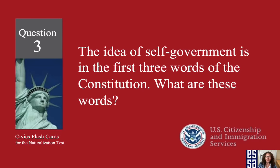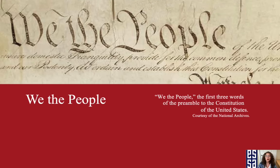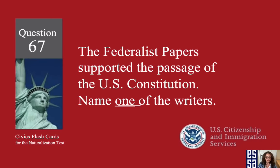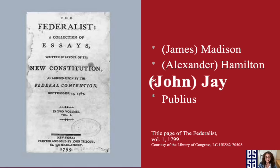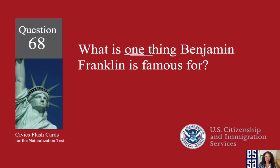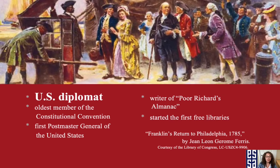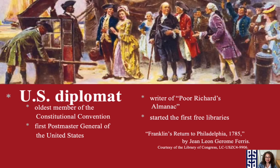The idea of self-government is in the first three words of the Constitution. What are these words? We the people. The Federalist Papers supported the passage of the U.S. Constitution — name one of the writers: John Jay. What is one thing Benjamin Franklin is famous for? He was a U.S. diplomat.